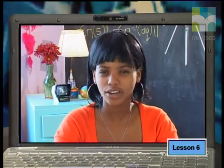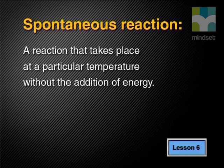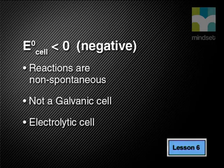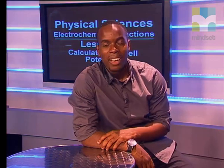A spontaneous reaction is one that happens on its own — like iron rusting in air. For the purpose of a definition, a spontaneous reaction is a reaction that takes place at a particular temperature without the addition of energy. If the E° cell is negative, the reaction is non-spontaneous: the cell cannot produce a potential difference; instead it requires an external electrical energy source to force the reactions to take place. So a negative E° cell tells us the cell is not a galvanic cell but an electrolytic cell.